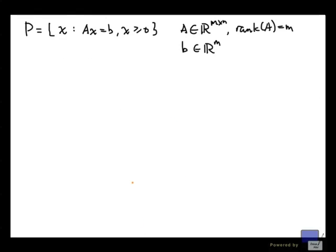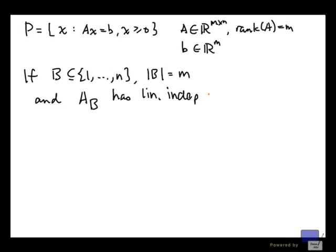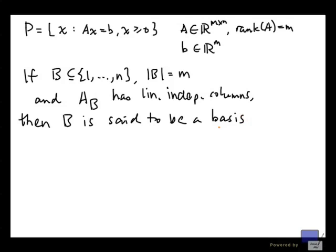And this leads to the following two definitions. So if B is a subset of 1 up to n with cardinality m and the submatrix formed from columns of A indexed by elements in B has linearly independent columns, then B is said to be a basis of A.